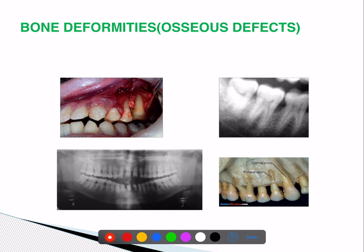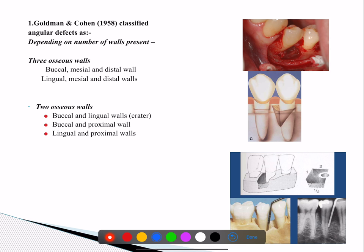Bone deformities or osseous defects include: dehiscence, where the entire part is exposed; fenestration, meaning small holes in the bone; and angular defects, compared to horizontal defects. Cohen classified osseous defects based on the number of walls present — since this can be confirmed when a flap is opened. Classification is based on number of walls present, not absent, because that is the certainty.